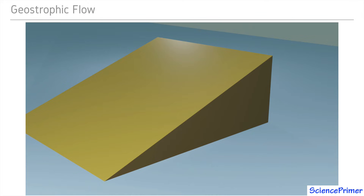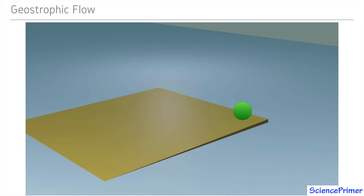The dynamics change if we alter the situation so that the slope of the plane is very shallow and the ball is tiny. As the slope of the plane and the mass of the ball decrease, the force of gravity acting on the ball becomes weaker. With a small enough ball and a shallow enough plane, Coriolis deflection becomes so influential that it overwhelms the orientation of gravity's pull down the slope, and the ball will actually move across the plane instead of down it.